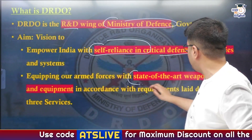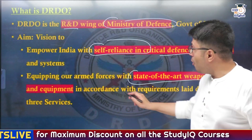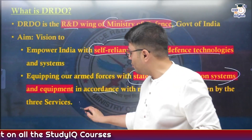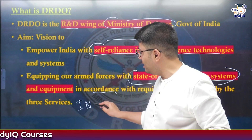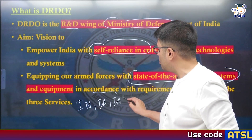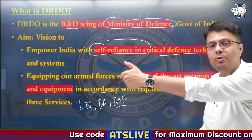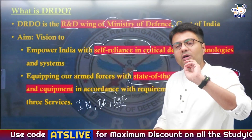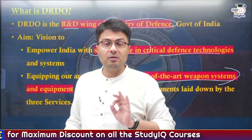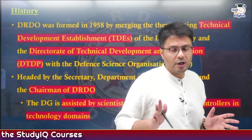Another objective is equipping our armed forces with state-of-the-art weapon systems that fulfill the needs of the three services — the Indian Navy, Indian Army, and Indian Air Force. These organizations highlight their requirements to DRDO, and accordingly DRDO develops and researches weapon systems sufficient for them. This is basically the role of DRDO.